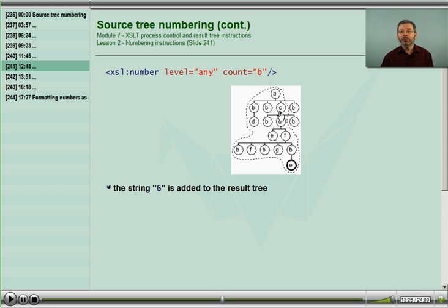Let's now count B's at any level. I see 1, 2, 3, 4, 5, 6. So 6 nodes are added to, the number 6 is added to the result tree. This is just saying add this number, counted this way, to the result tree.